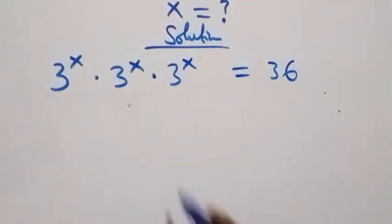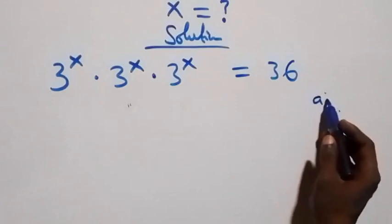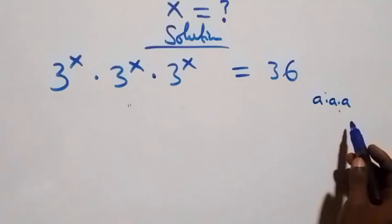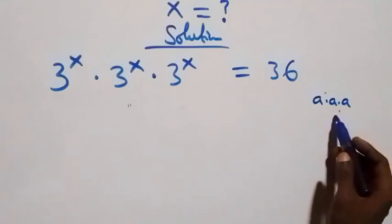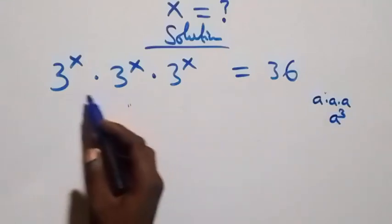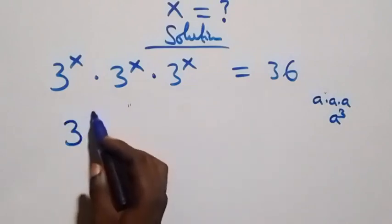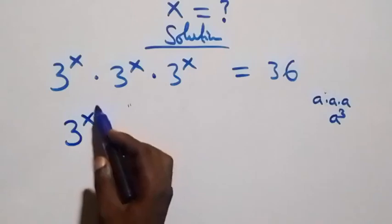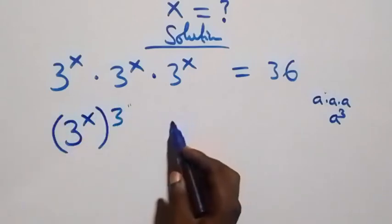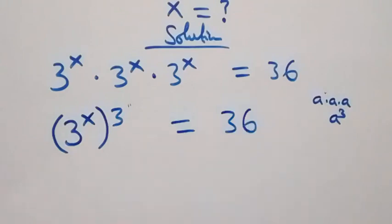From here, we observe that when we have a times a times a, we can write that as a raised to power 3. In the same way, we can write this expression as 3 raised to power x, then raised to power 3, equals 36.